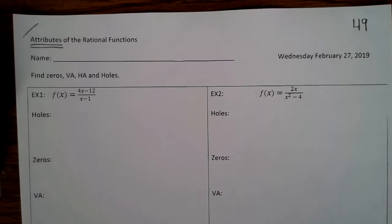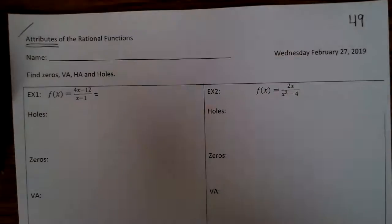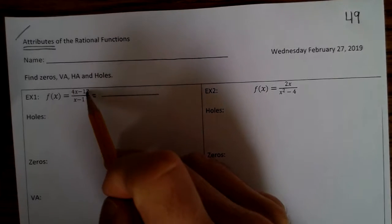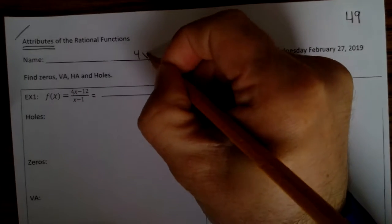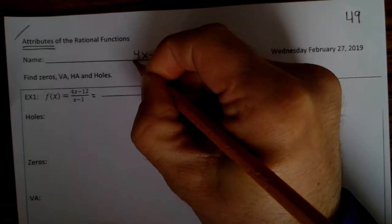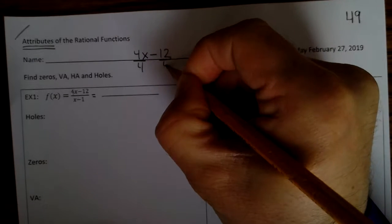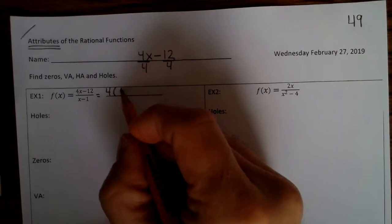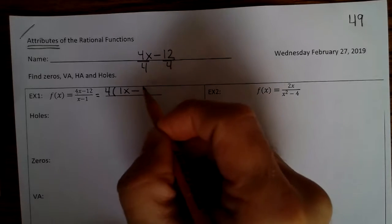Find the zeros, vertical asymptote, horizontal asymptotes, and holes. The first step is to factor. What we mean by factor is we think about what we can divide the two terms by. So we have 4x minus 12 — we can divide them both by 4. So we factor a 4 out: 4x divided by 4 is 1x.